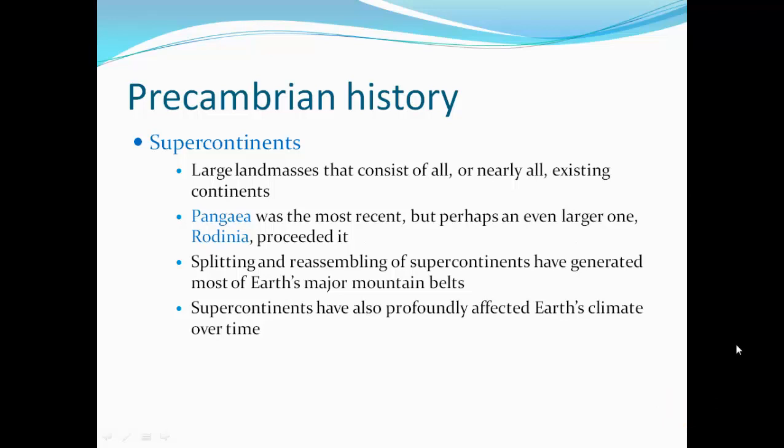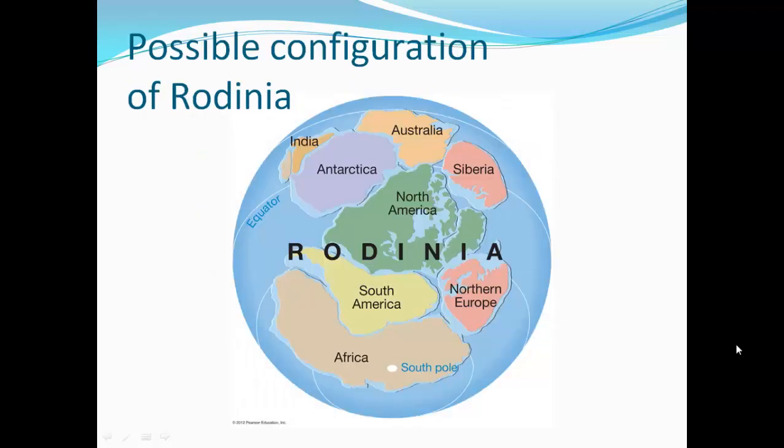Supercontinents are large land masses that consisted of all or nearly all the existing continents. Pangaea was the most recent supercontinent that had all the continents together, but we may have had a large one prior to it called Rodinia. The splitting and reassembling of supercontinents have generated most of Earth's major mountain belts. Supercontinents have also profoundly affected Earth's climate over time.